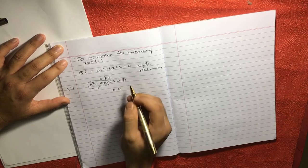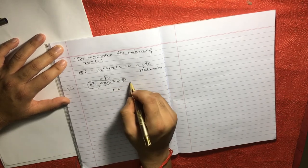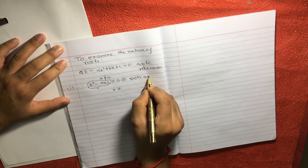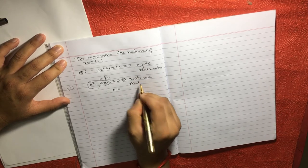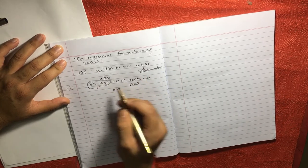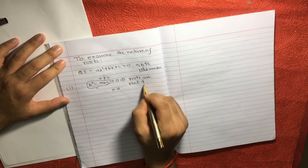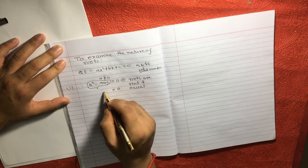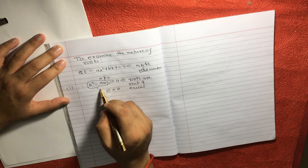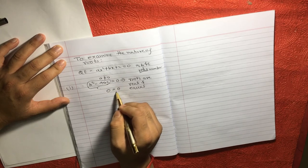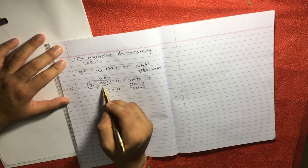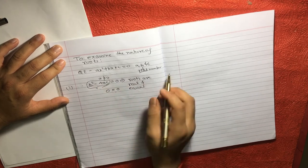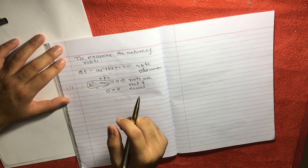then this will be considered as roots are real because there are some number. And this is also considered as equal because the value, let's say, whatever the value comes after solving this will be equal to 0. Let's say, this is 10. And after multiplying or solving all this equation, this is again 10 minus 10 is equal to 0. I am just giving an example.